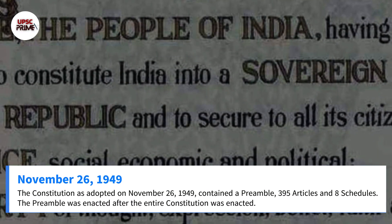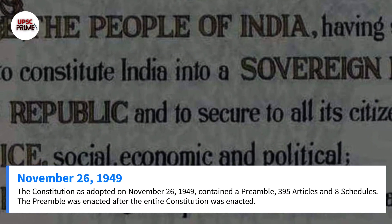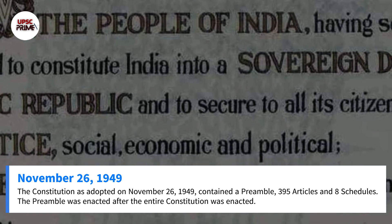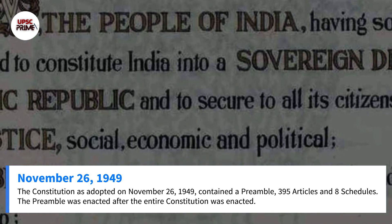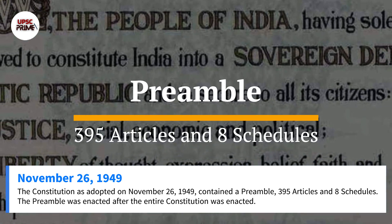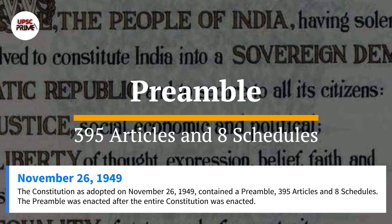The Constitution as adopted on November 26, 1949, contained a preamble, 395 articles, and 8 schedules.